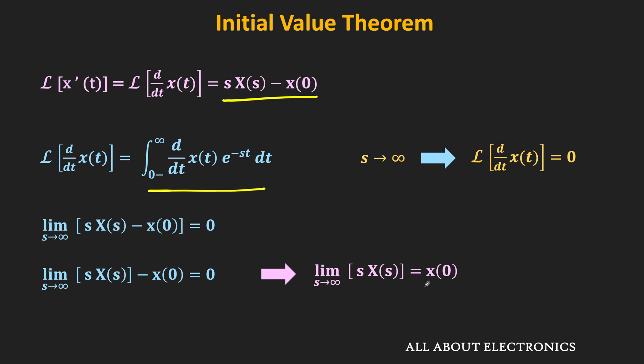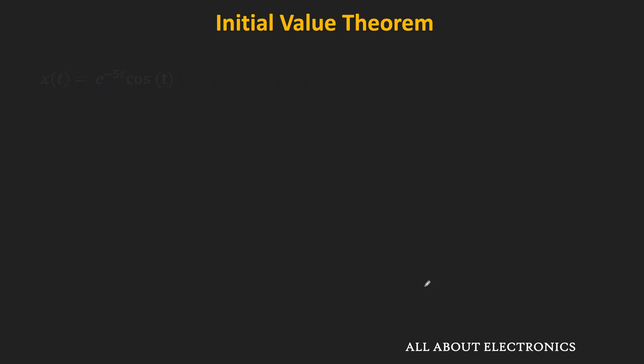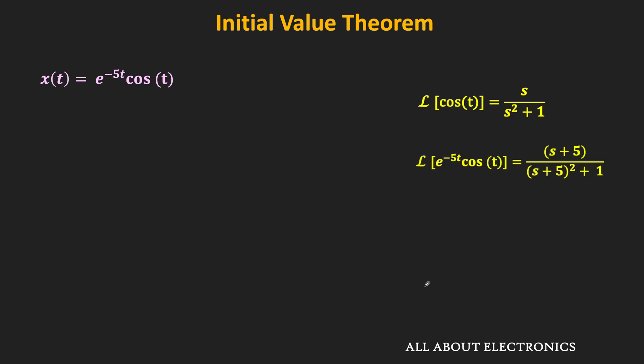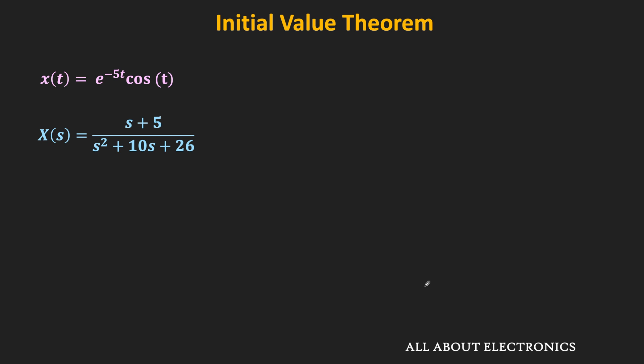Let us take one example based on this theorem. Suppose we have a function x(t) = e^(−5t)·cos(t). We know that the Laplace transform of cos(t) is s/(s² + 1). As per the frequency shifting property, when multiplied by e^(−5t), s is replaced by (s + 5). Therefore, the Laplace transform of x(t) is (s + 5)/[(s + 5)² + 1], which equals (s + 5)/(s² + 10s + 26).